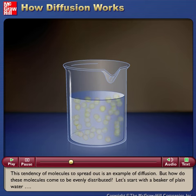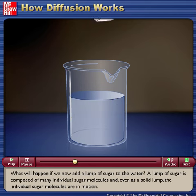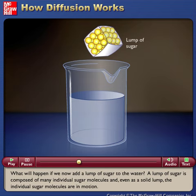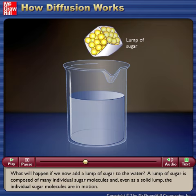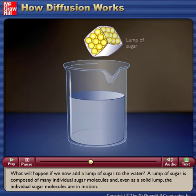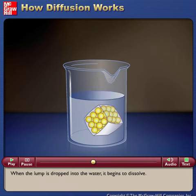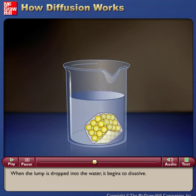Let's start with a beaker of plain water. What will happen if we now add a lump of sugar to the water? A lump of sugar is composed of many individual sugar molecules, and even as a solid lump, the individual sugar molecules are in motion. When the lump is dropped into the water, it begins to dissolve.